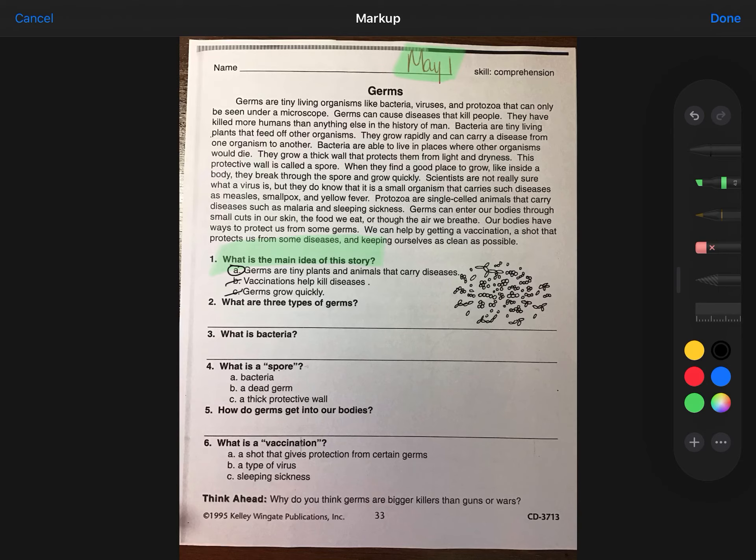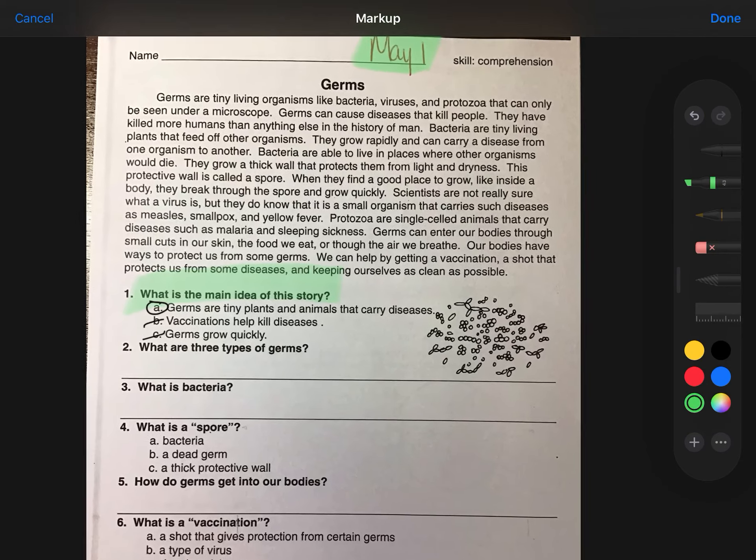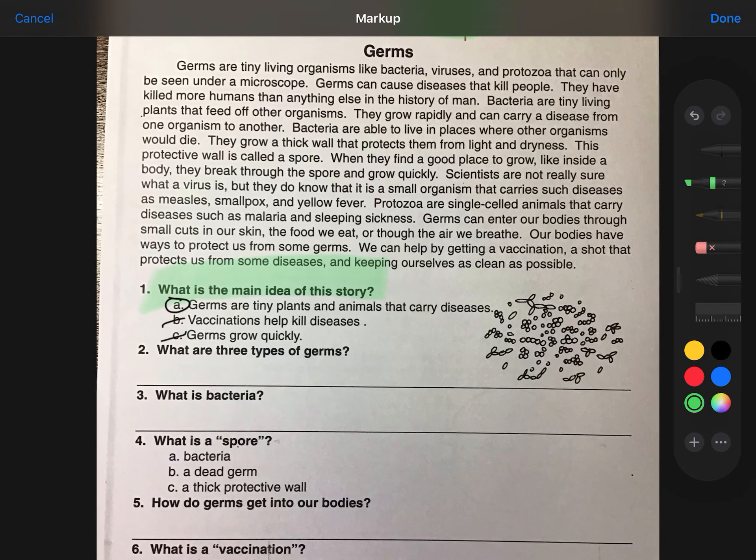Two, what are three types of germs? We'll go straight from the text here. Germs are tiny organisms like bacteria, viruses, and protozoa. So those are the types.